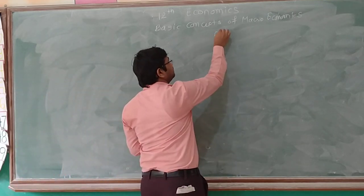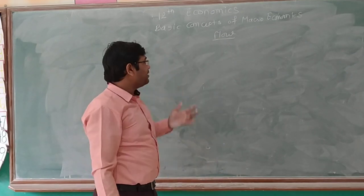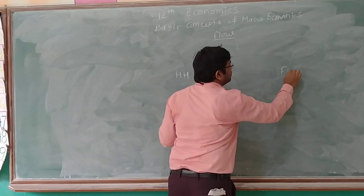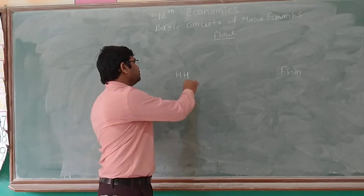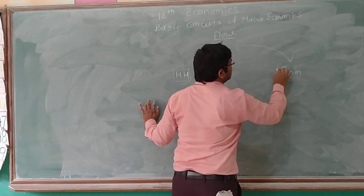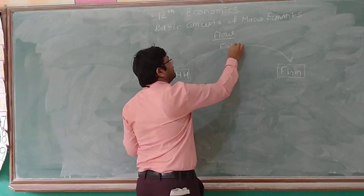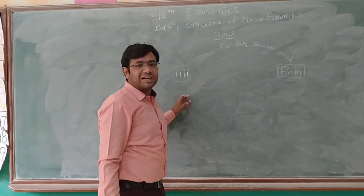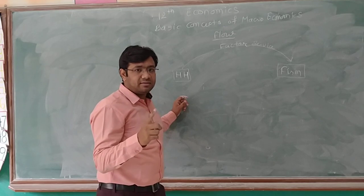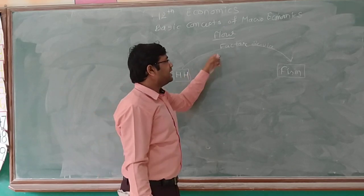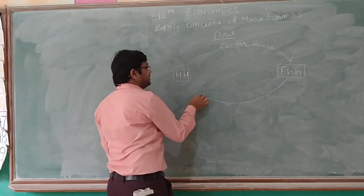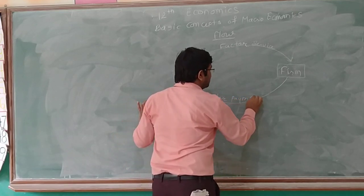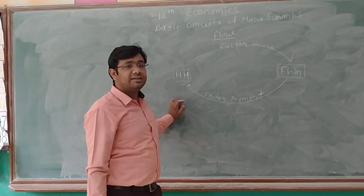The last topic for today is flows in the economy. Here we have households and here we have firms. Households provide factor services to firms. Factor services include the four factors of production: land, labor, capital, and entrepreneurship. In return, firms pay for those services, which is known as factor payment.